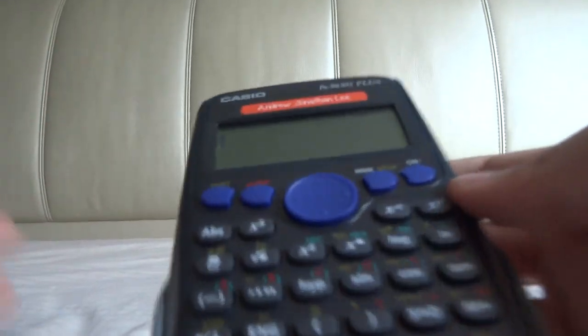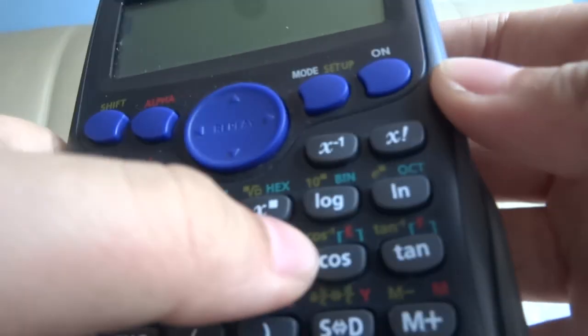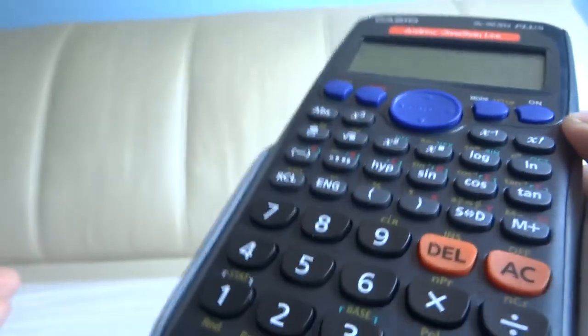This is the FX-96SG Plus. This is a Casio calculator and if you have this calculator, the only alphabet you can see is A, B, C, D, E, F. So how do you type the others?